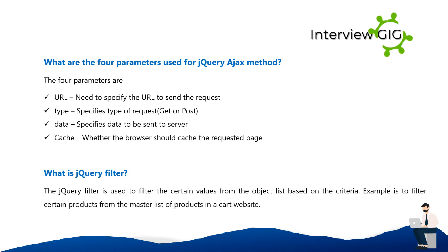What are the four parameters used for the jQuery Ajax method? The four parameters are: URL — the URL to send the request to; type — specifies the type of request (GET or POST); data — data to be sent to the server; cache — whether the browser should cache the requested page.